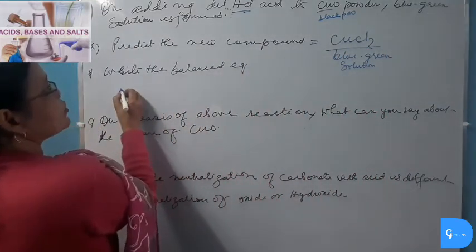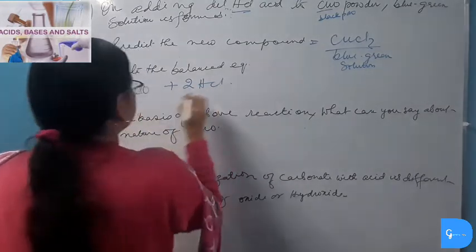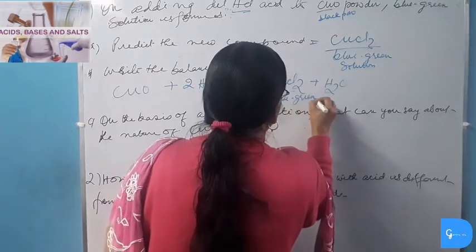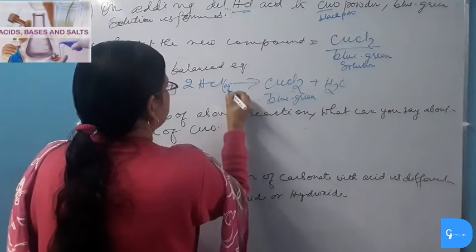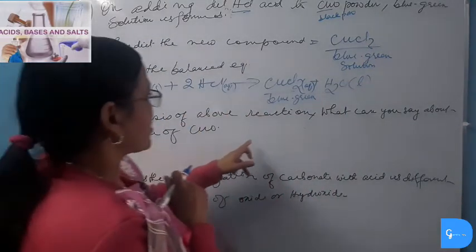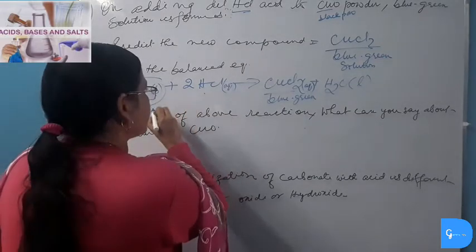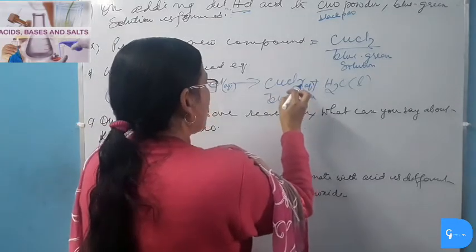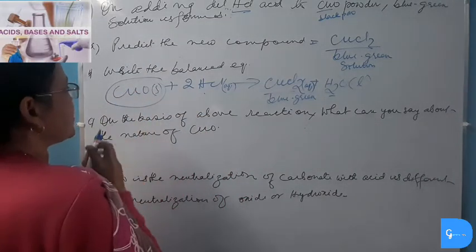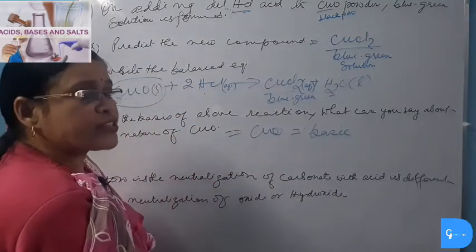Balanced equation: CuO(s) + 2HCl(aq) → CuCl₂(aq) + H₂O(l). Copper(II) oxide is solid; HCl is aqueous; CuCl₂ is aqueous (blue-green) and water is liquid. On the basis of this reaction, we can say that CuO is basic in nature, because acid reacts with base to give salt plus water. Thus, metallic oxides are basic in nature.